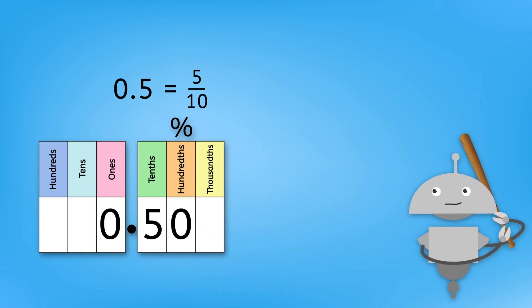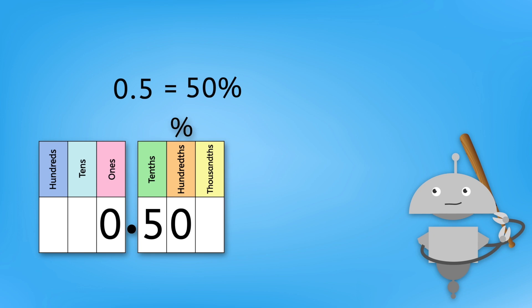Oh yeah, we can add placeholder zeros to the end of decimals without changing the value. Aha, 50%. And that makes sense. Five tenths is the same as one half, and 50% means one half.